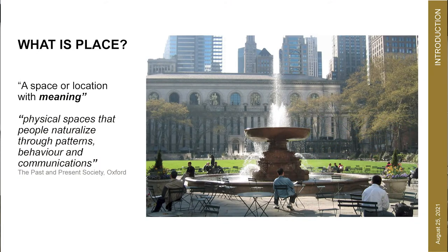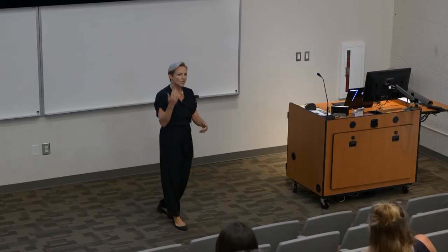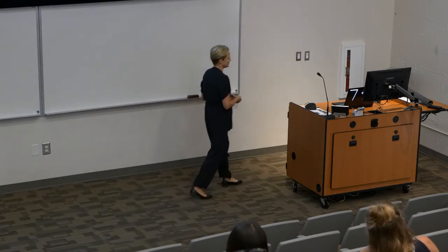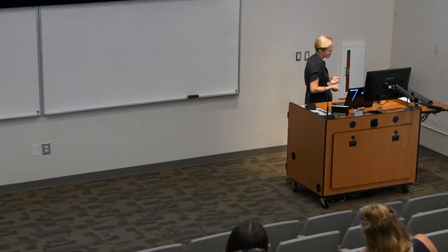I'll start with a simple question: What is place? It depends on who you ask — there are a lot of different definitions out there. In the world of landscape architecture, when we talk about place, we're most often talking about the human lens of a space, the human perceptions of a space. A space does not become a place until it goes through that human understanding — our emotions, our attachments, our perceptions of how we experience something.